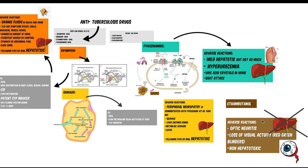Last but not least, ethambutol works by blocking cell wall synthesis by inhibiting the enzyme arabinosyl transferase. The adverse reactions are optic neuritis and loss of visual acuity — especially for red and green colours, as patients cannot differentiate between them. Ethambutol is also non-hepatotoxic.